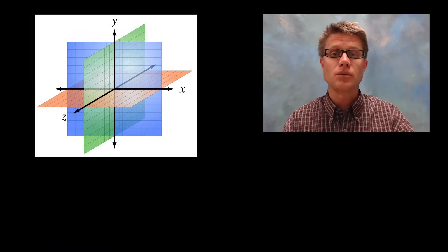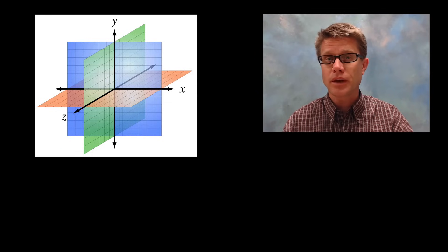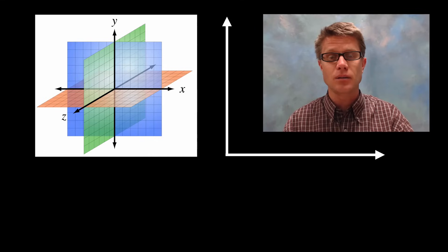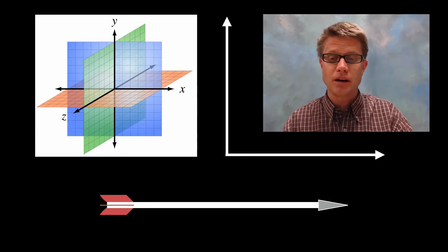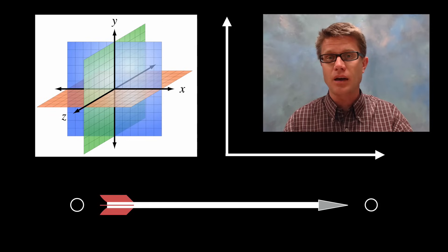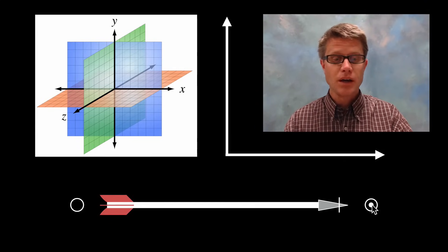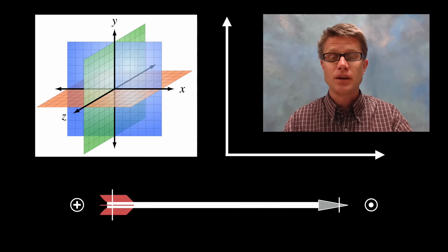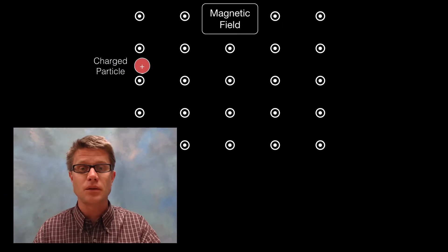As we move into magnetic forces, we're really moving into a third dimension, and we have to have a way to deal with that. With two dimensions it's easy on paper, but how do you represent a magnetic field coming at you or going away from you? The way I remember it is like an arrow: if an arrow is going through a hole you just see the point on the end. So if you see concentric circles — dots — that means the magnetic field is coming towards you. The tail end of the arrow looks like a plus sign or an X inside a circle, meaning it's going away from you. That will make sense when you see diagrams like this.